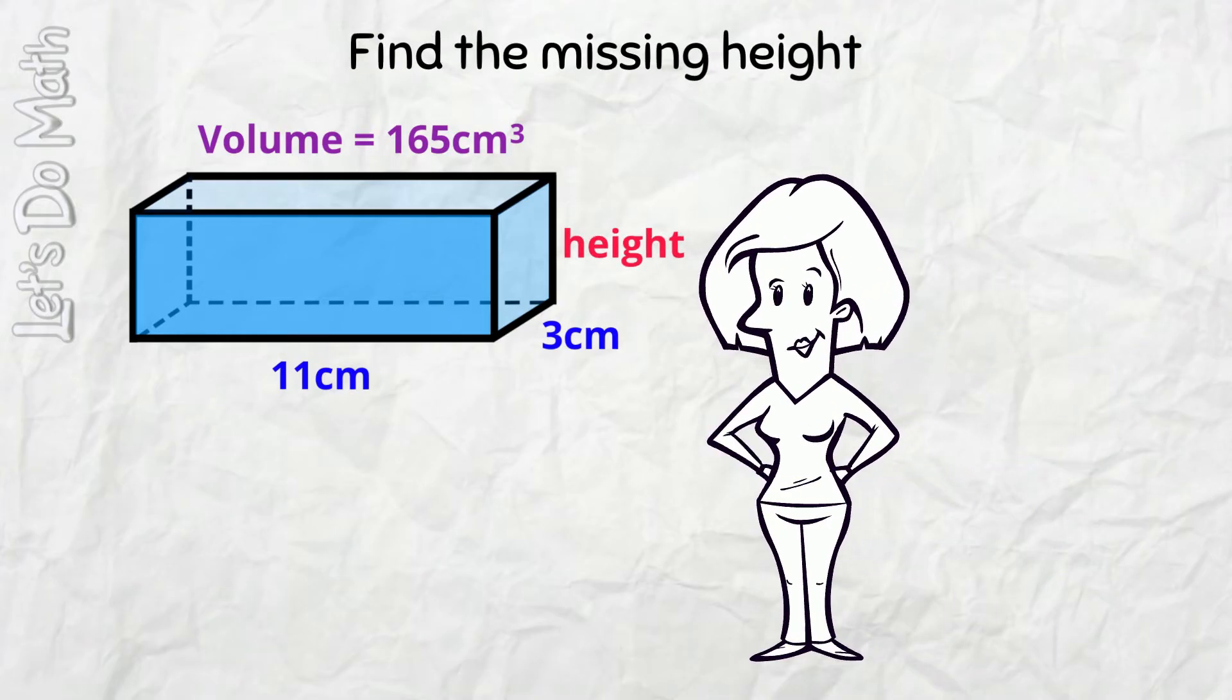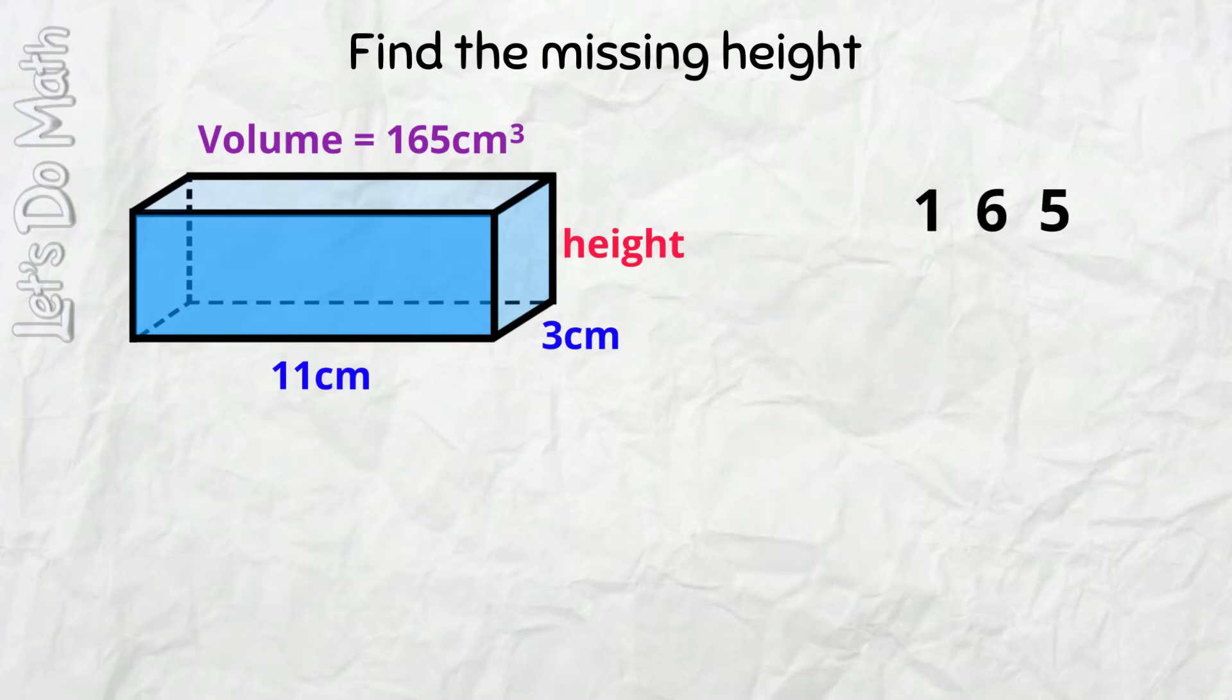First, I'm going to divide by 3 because it's EASY! 165 divided by 3, 3's into 16, 5, 3's of 15 remainder 1, and 3's into 15 again? 5... 55